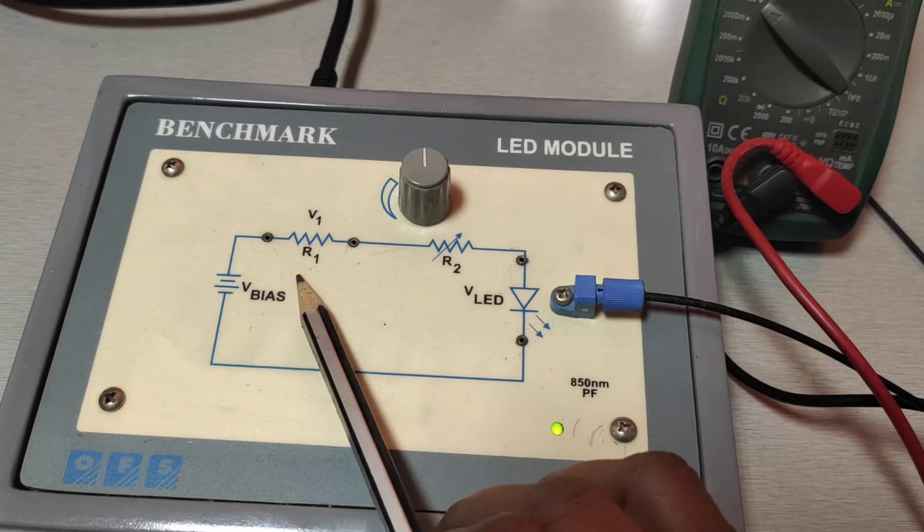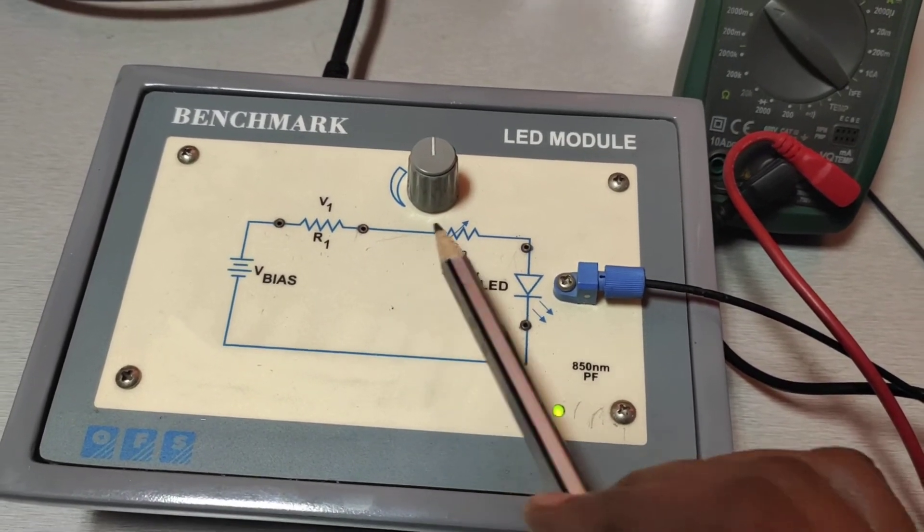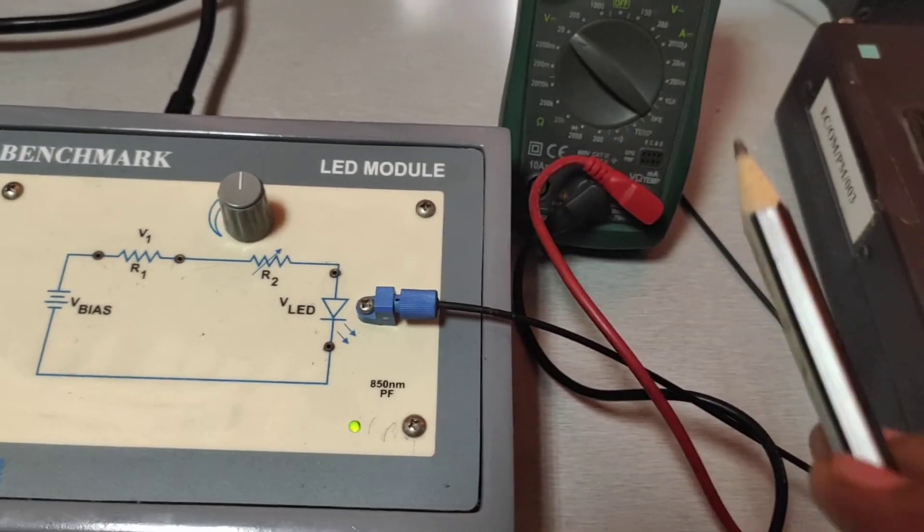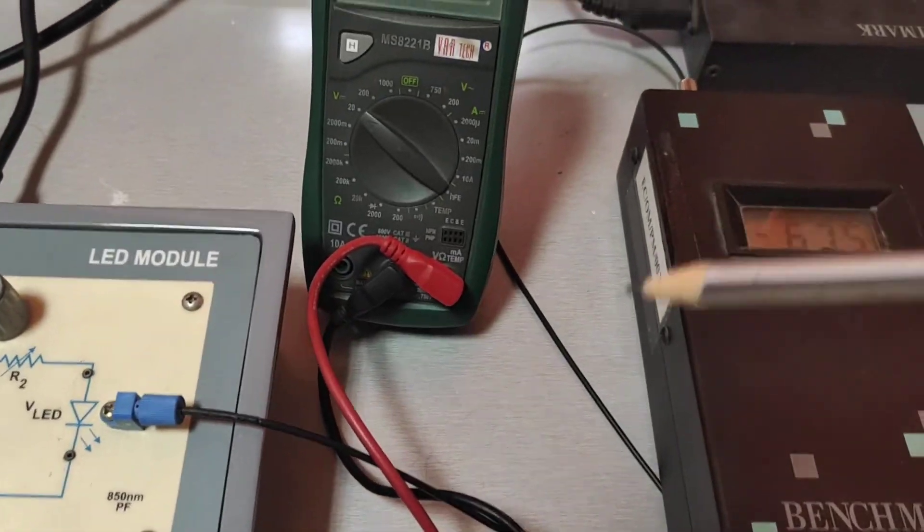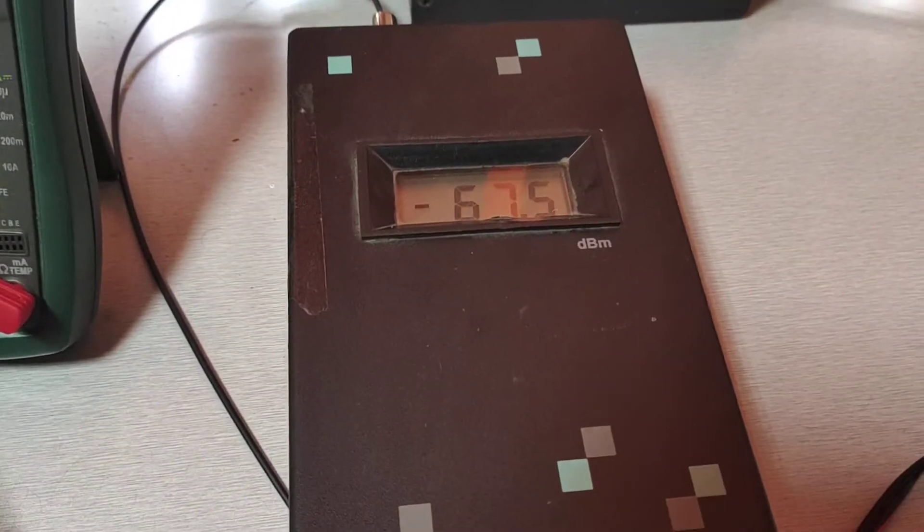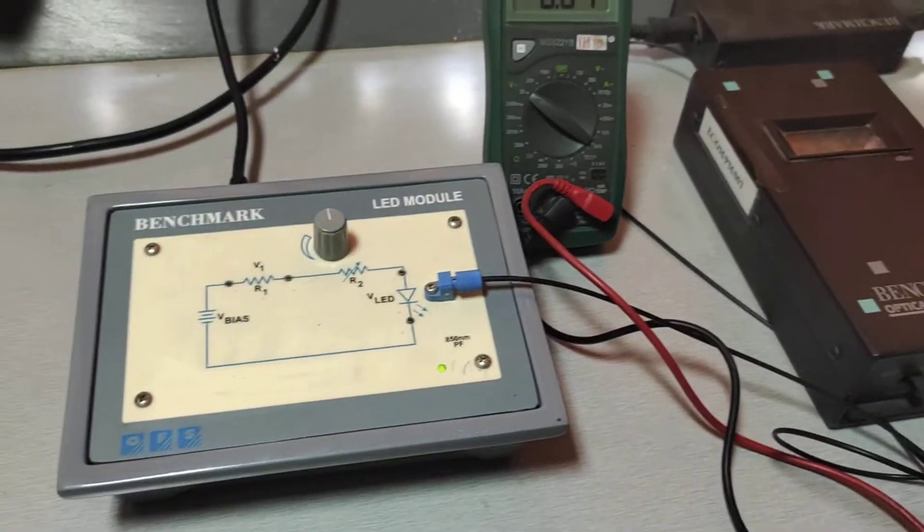After setting V1, we calculate the IF value. Then we measure the voltage across the LED, VLED. And then we measure the optical power. This is the way we study the DC characteristics of LED.